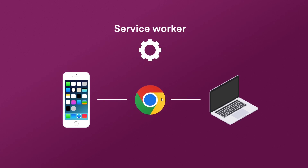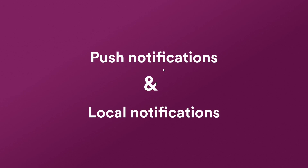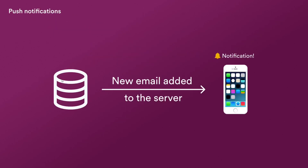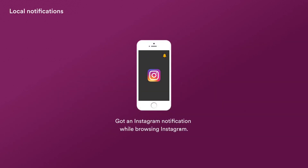So there are essentially two kinds of notifications. One, as we already mentioned, is the push notification, and the second one is local notifications. Push notifications typically come from a server when some event has happened — like for instance if you have new mails in your inbox, you ideally should get a notification even if you do not have the app open.